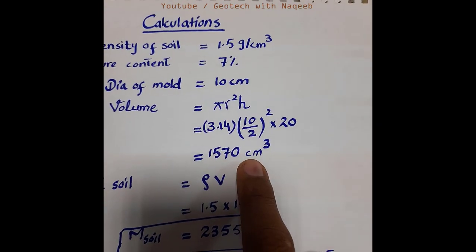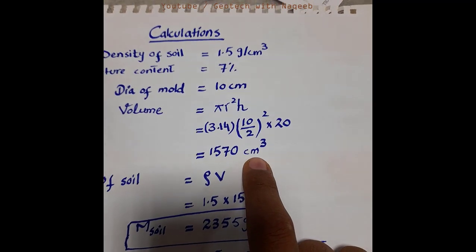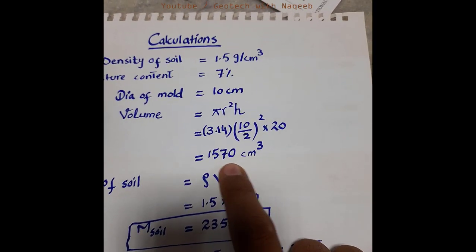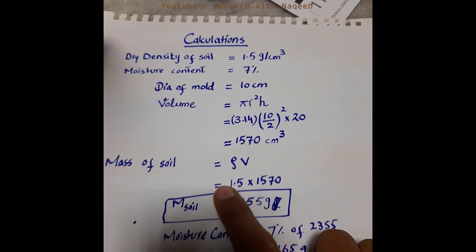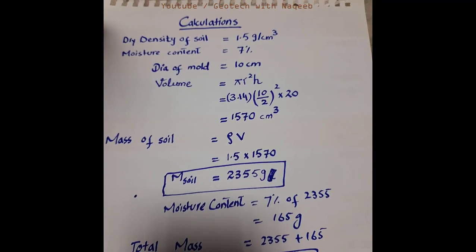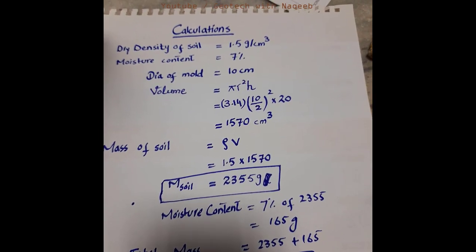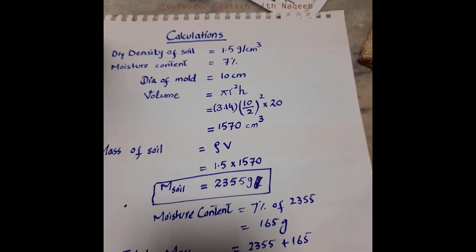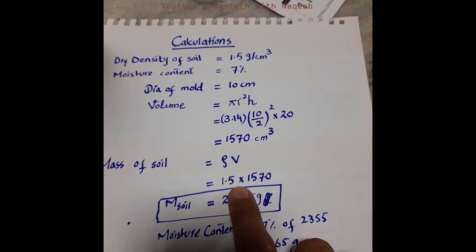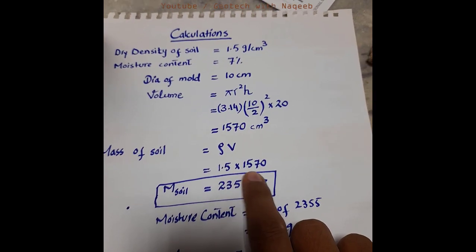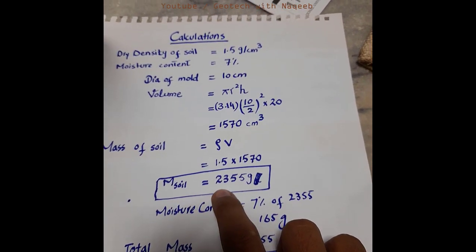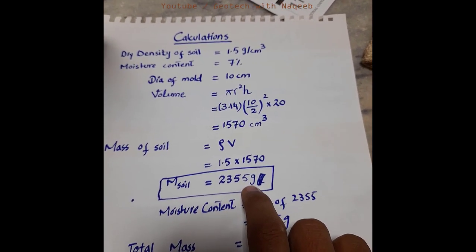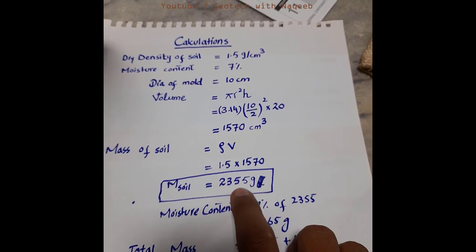Now we determine the mass of soil required to fill this volume. The formula is: mass = density × volume. We have the dry density of 1.5 g/cm³ multiplied by the volume of 1570 cm³, and the mass of soil comes out to be 2355 grams. Now we'll take 2355 grams of soil sample.